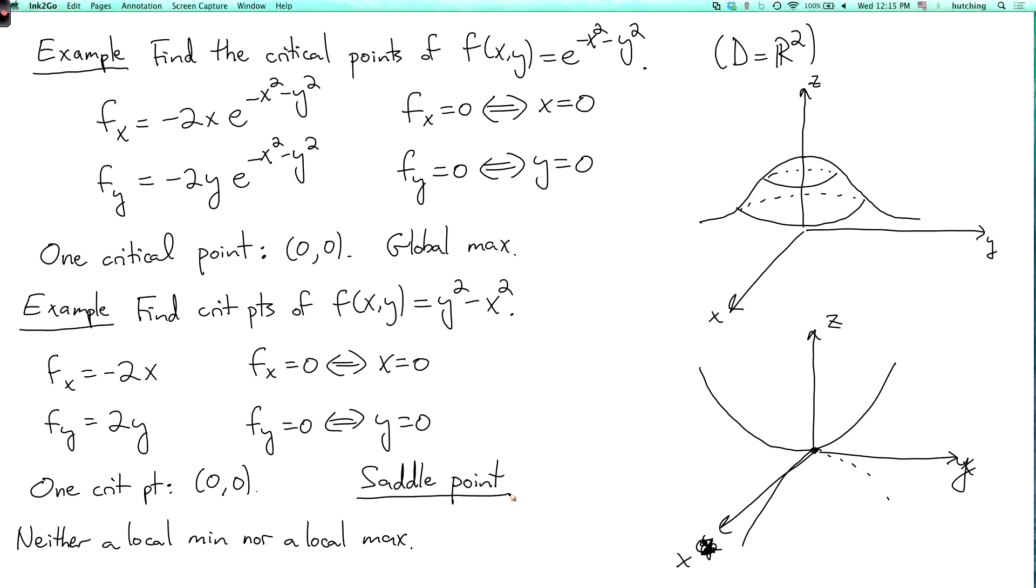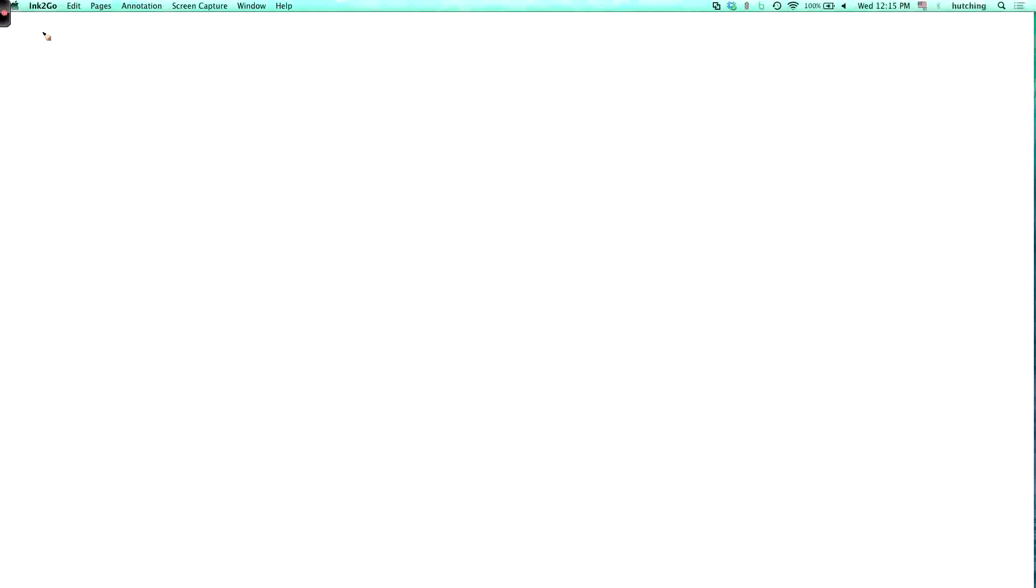Now let's look at a slightly more complicated example. So let's find the critical points of f of xy equals x squared times y squared times e to the minus x squared minus y squared.